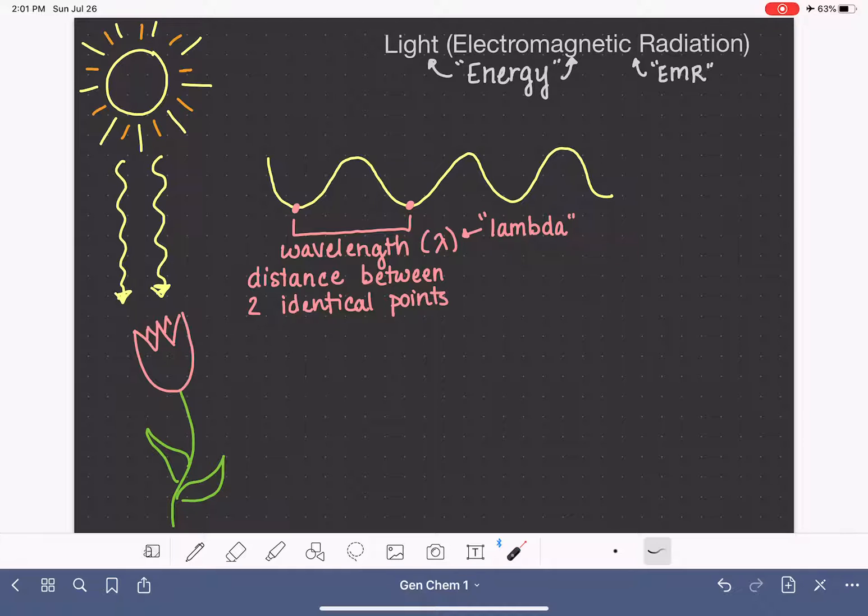Another way that we can describe the wave of energy is with its frequency. Now to explain frequency to you, I'm going to draw another wave down here. When we're measuring the frequency of a wave, what we're going to do is select a point on the wave. For example, let's select the high points. We're going to identify a finish line, kind of like a finish line that you would cross if you're running a race.